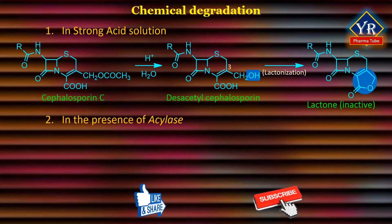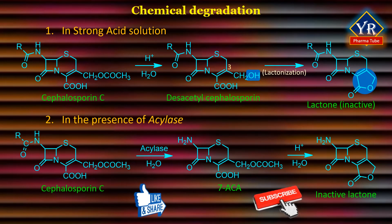Degradation in the presence of an acylase enzyme: The 7-acylamino group of some cephalosporins can also be hydrolyzed under enzymatic and non-enzymatic conditions to give 7-aminocephalosporonic acid or 7-aminodesacetylcephalosporonic acid derivatives. Cephalosporin C on enzymatic degradation in the presence of an acylase enzyme gives 7-aminocephalosporonic acid, in which the R1 group or the 7-amino group is stable. The 3-acetoxymethyl group of 7-ACA on further hydrolysis under acidic conditions lactonizes to form an inactive lactone named 7-aminodesacetylcephalosporonic acid.